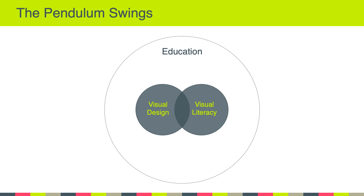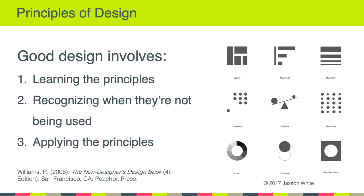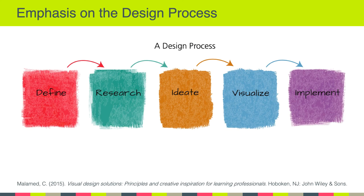Swinging back over to visual design, we are going to continue with our principles of design. Let's contrast principles of design with our elements of design that we talked about earlier. We talked about this idea introduced by Williams that good design involves learning the principles of good design, recognizing when they're not being used, and applying those principles. This past week we did a great job learning about proximity, alignment, and repetition, and there are other principles shown here that we will be studying in the weeks ahead. Malamed, in her book Visual Design Solutions, emphasizes the importance of the design process and argues for a five-step process that involves defining, researching, ideating or brainstorming, visualizing, and implementing.